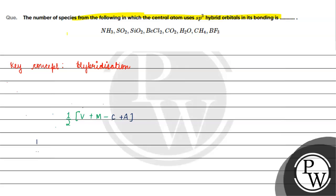First, NH3. Nitrogen is the central atom. It has 5 valence electrons. Hydrogen is the monovalent species — there are 3 of them. So we get half of (5 + 3), which is half of 8, giving us 4. That means sp3 hybridization.